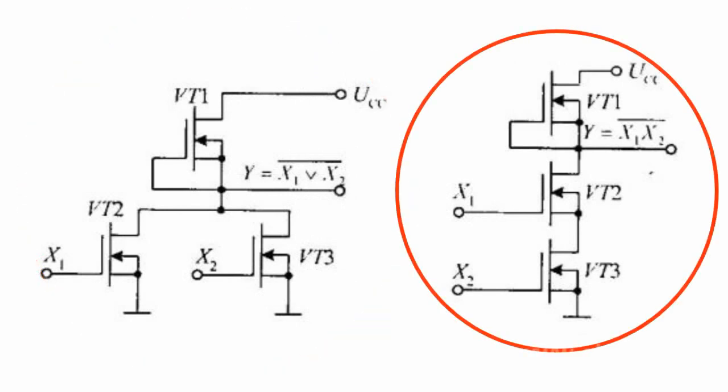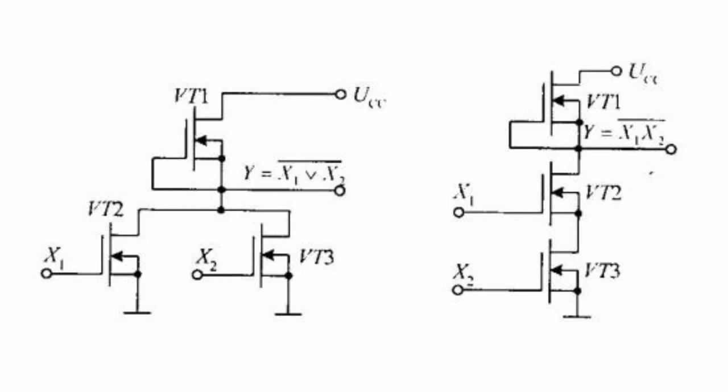An AND NOT element is created by consecutive connection. The value of logical zero is indicated by voltage equal to 0.1V. The value of the logic one is indicated by the power supply voltage.